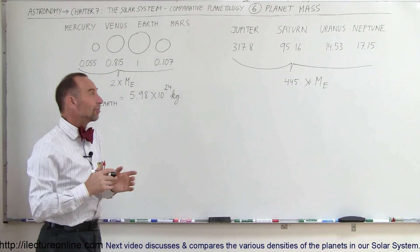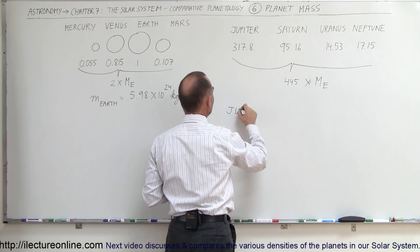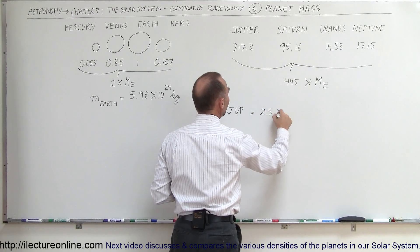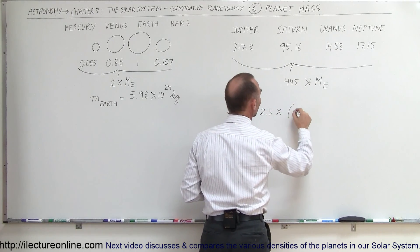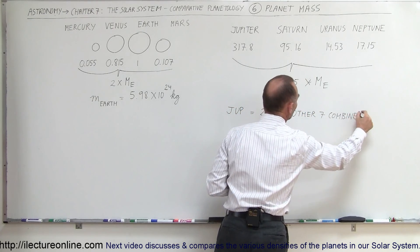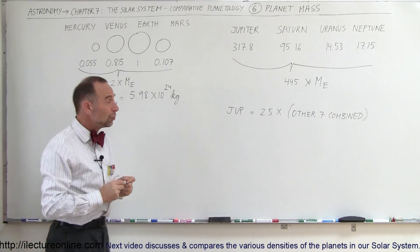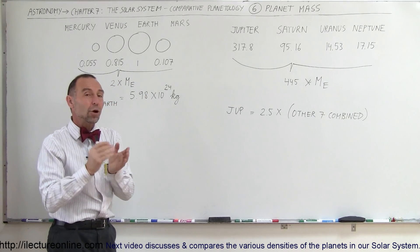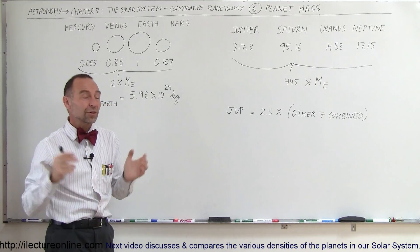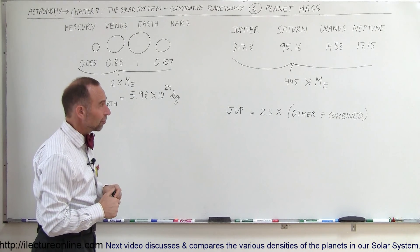If you compare Jupiter to the rest of the planets, if you take Jupiter by itself, Jupiter has about 2.5 times as much mass as the other 7 combined. Matter of fact, if you also throw in all the comets and the asteroids and everything else, all the moons, Jupiter has more mass than all the other planets, all the moons, all the asteroids, and all the comets combined. Jupiter by far is the giant of planets in our solar system.